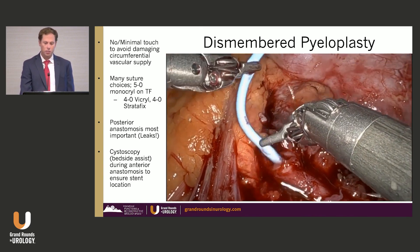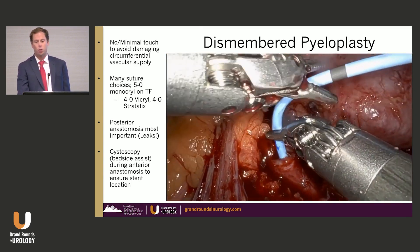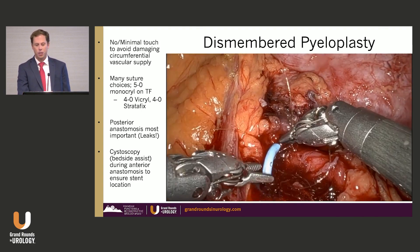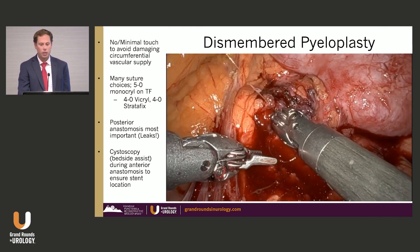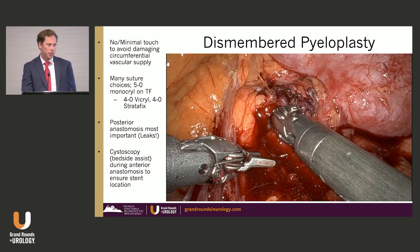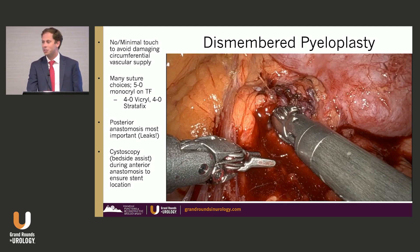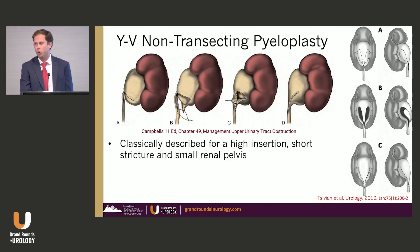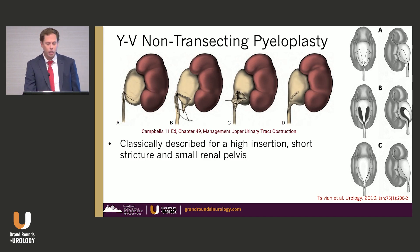Once the posterior stitches are down, it's a bit easier as you can use the suture for traction. Here we've just passed the stent down, and after it's appropriately placed we'll finish the anterior portion of the anastomosis. I typically like to have the bedside assistant do a cysto before the end of the case to confirm the stent is down. You can still adjust it while doing the anterior anastomosis — otherwise you'll have to go fishing for it or do ureteroscopy to retrieve it later, which can be difficult.